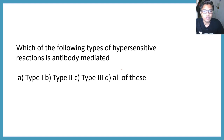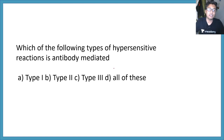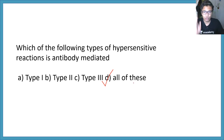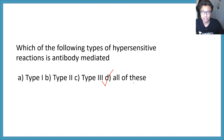Which of the following types of hypersensitivity reaction includes antibody-mediated responses — type 1, type 2, type 3, or all of these? The correct answer would be all of these. All of these involve some sort of antigen-antibody interaction. If you want to learn more about it, you can get it in the I button about all the hypersensitivity reactions.